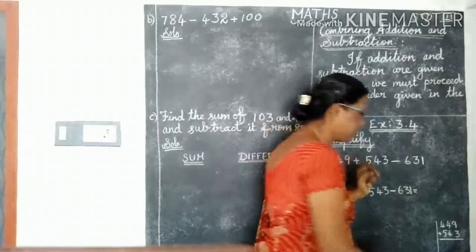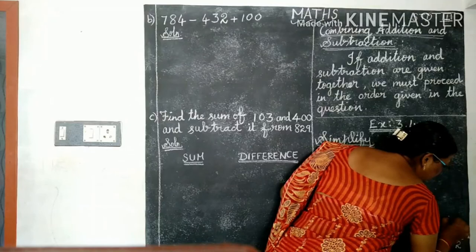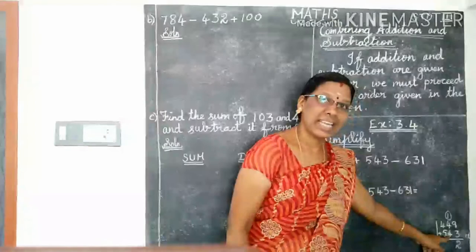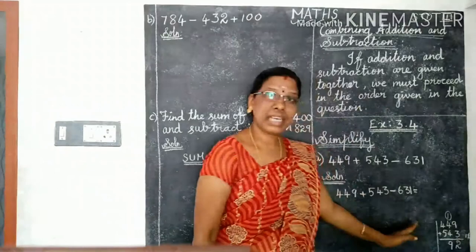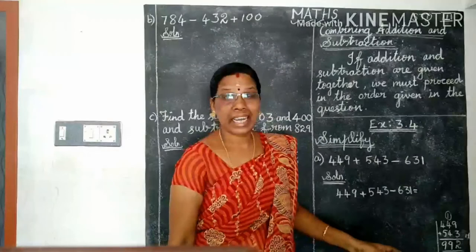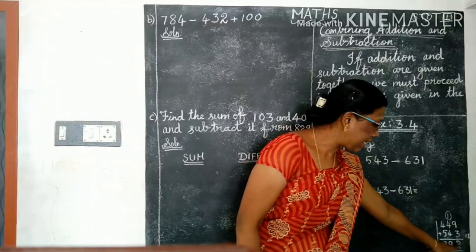9 plus 3 is 12. 2 digits. So 2 cut and write. This 1 carry over to the next number. Again, add this 3. 10's place. 4 plus 1 is 5, 5 plus 4 is 9. Again, go to 100's place. 4 plus 5 is 9. Now we get 992. So if you add these two numbers, we will get 992.